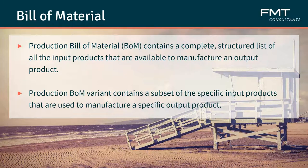Bill of materials: production bill of materials contain a complete and structured list of all input products that are available to manufacture and output products. Production bill variants are included as well. A variant contains a subset of specific input products used to manufacture a specific output product. For example, you can define a production bill of material for all engines for a particular type of car, and then define variants for individual engine types — such as a 1.6 liter engine and a 2.0 liter engine. By using variants, you only need to enter the input product once, simplifying the bill of material definition and reducing maintenance.